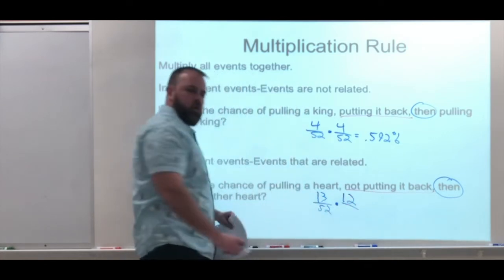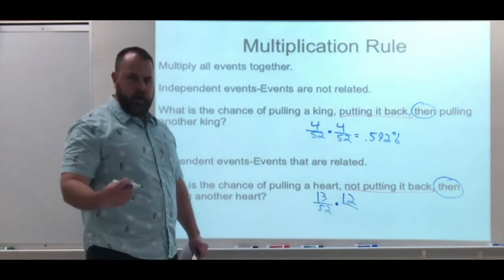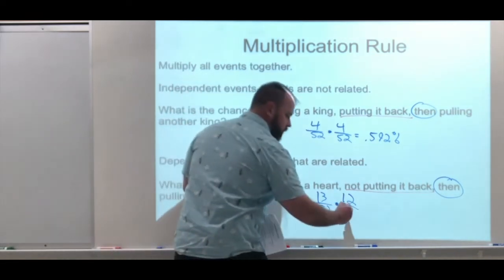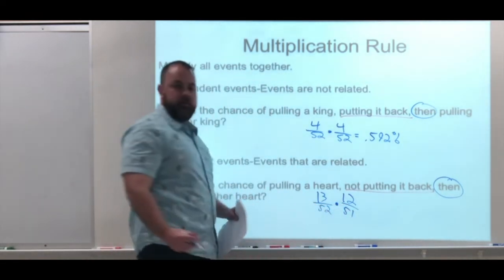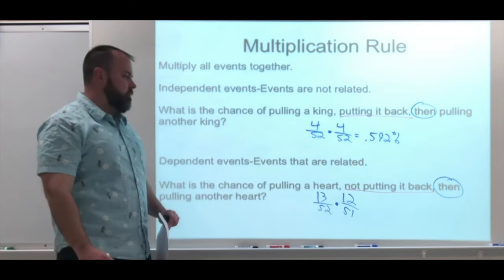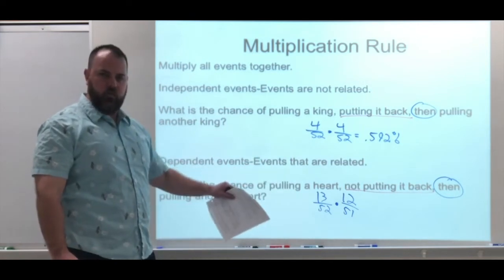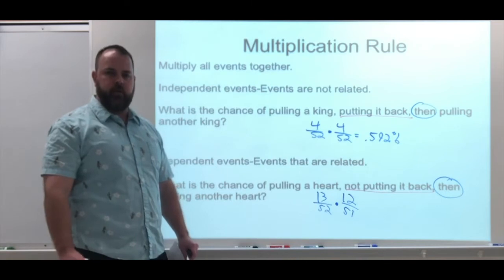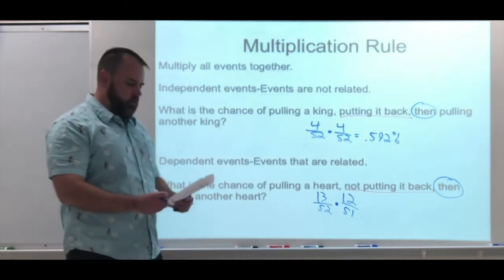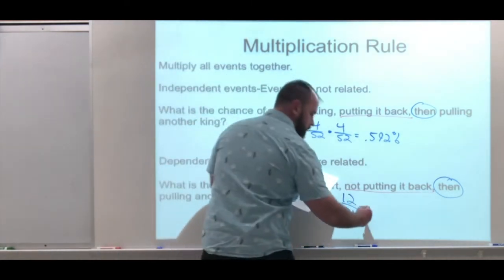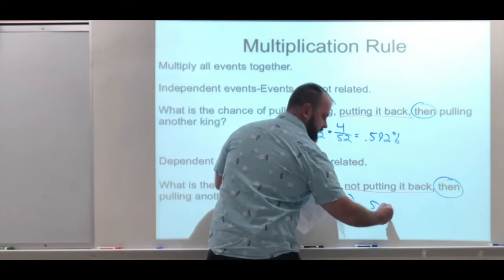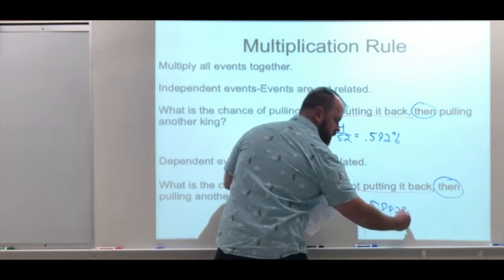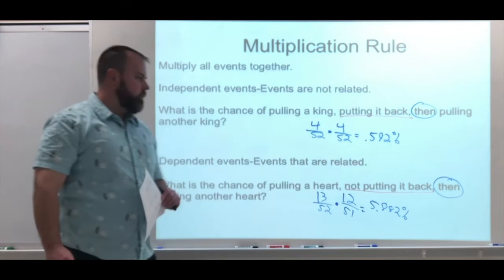Same thing with the total. We took one of those 52 out. We did not put it back, so it drops to 51. This is what makes it a dependent event. The event of the outcome of event one did change the outcome of the probability for event number two. Doing these up, I have 5.882%.